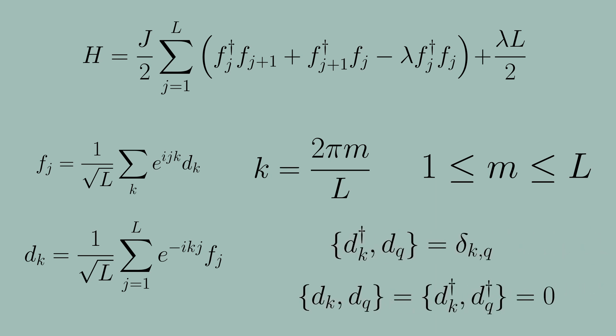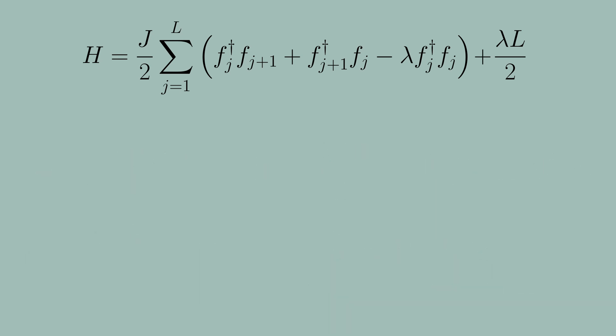An interesting thing to note here is that the vacuum state of the local fermions is the same as the vacuum state of the fermionic momentum operators dk. As we will see this is of course not always the case and not all mappings that we'll be interested in will preserve this property.